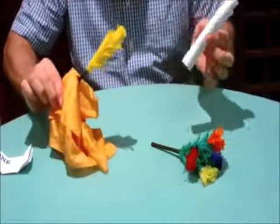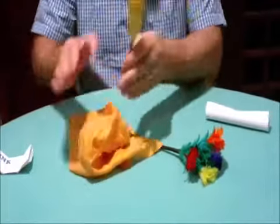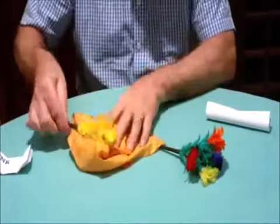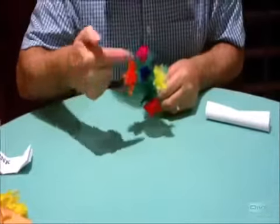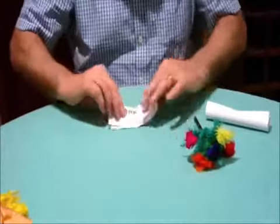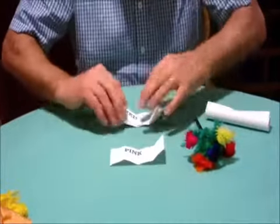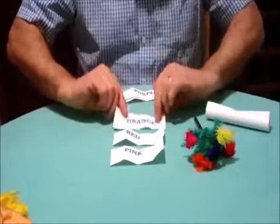We also have a little bouquet with different flowers on there, and I've got some labels that I've made: pink, red, orange, purple, and yellow. They match the colors that are on the bush there, same as on the labels.